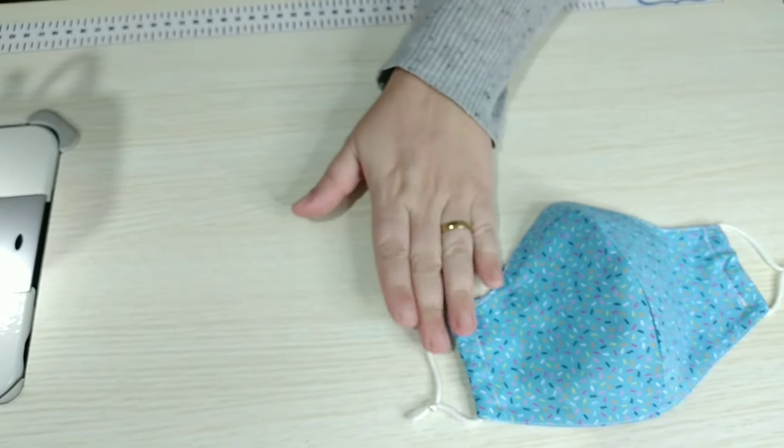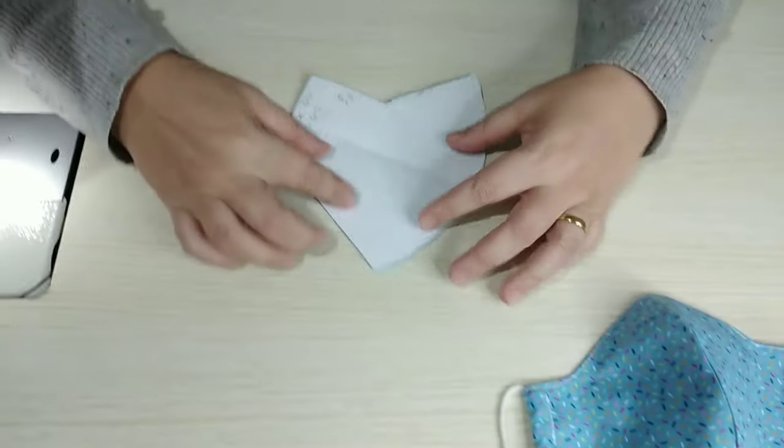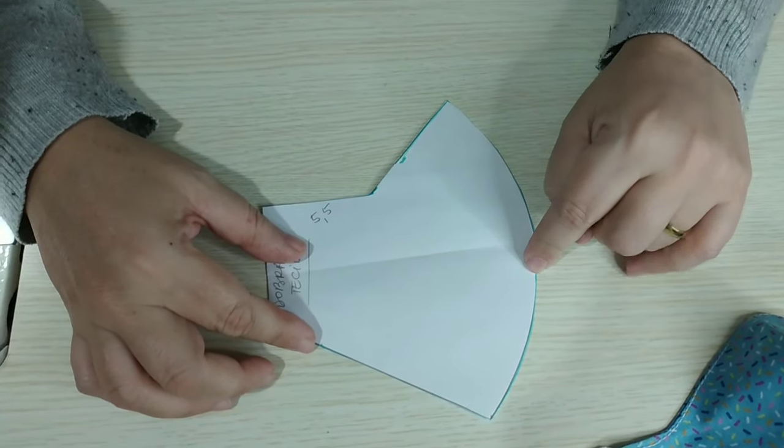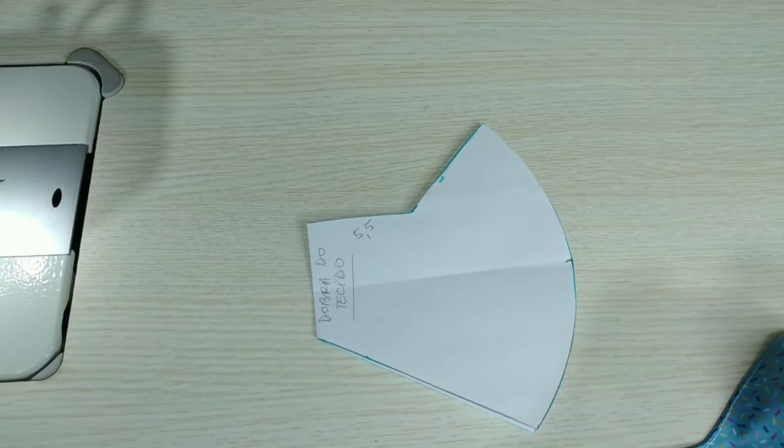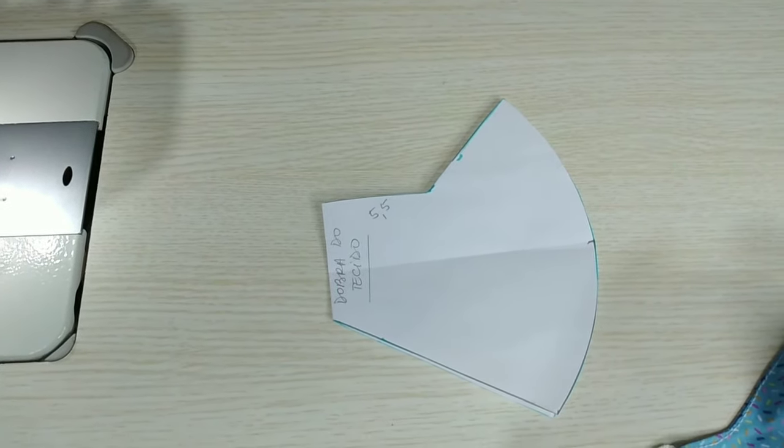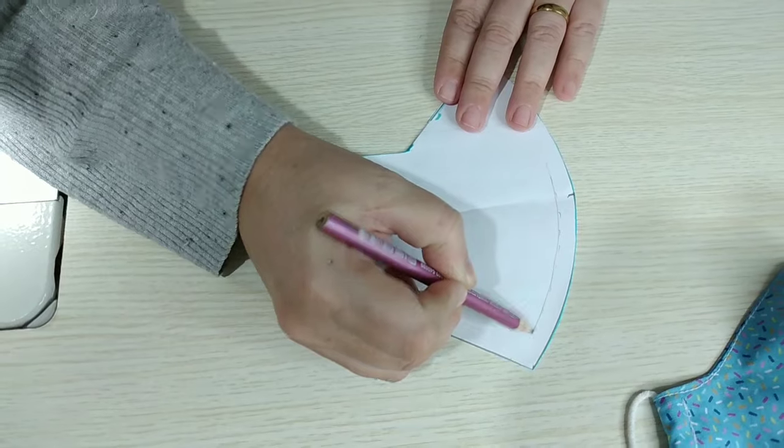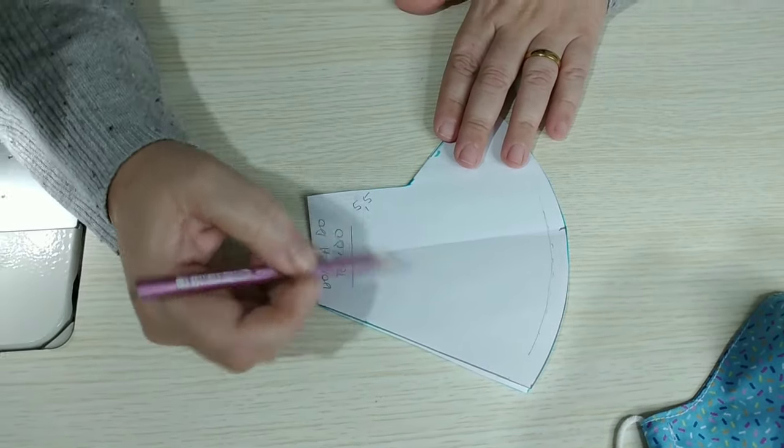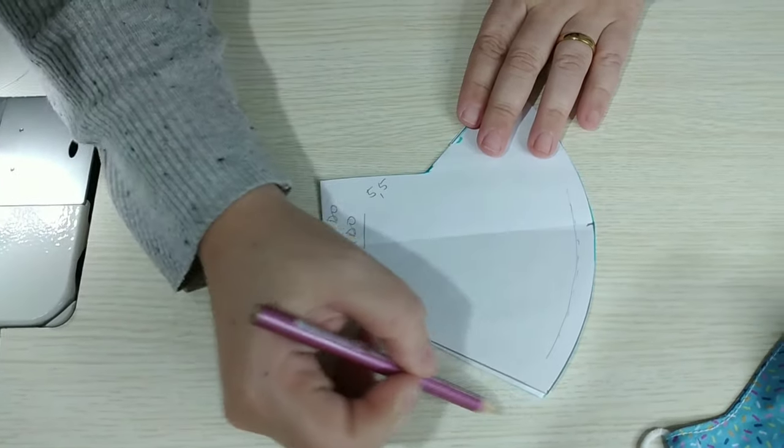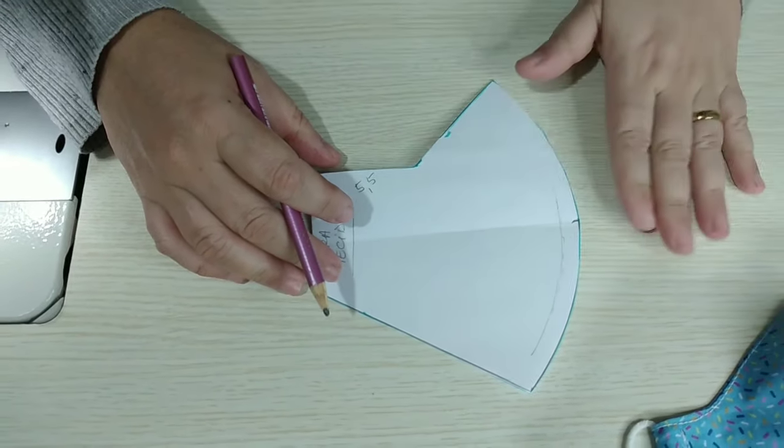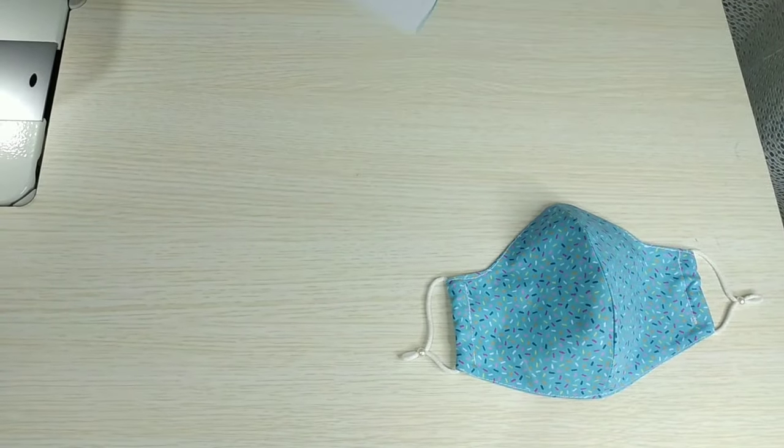Eu vou deixar pra vocês aqui na descrição do vídeo o molde em PDF pra vocês baixarem. Deixa eu só explicar uma coisinha a vocês. Se vocês quiserem fazer o tamanho P, diminui um centímetro a toda a volta. Você vai traçar aqui um centímetro. E depois completa assim o risco a toda a volta dela aqui. Se quiser fazer a G, faz daqui pra cá um centímetro, aumentando a toda a volta dela. Que aí vai ter o tamanho P, M e o G. Esse que a gente fez aqui no vídeo é o tamanho M.